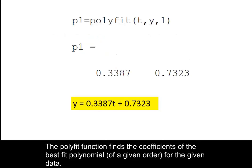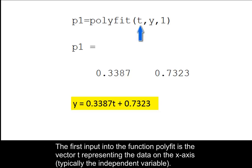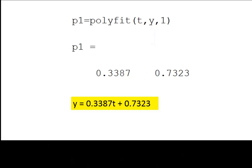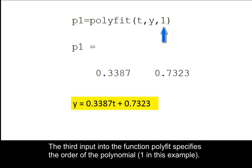The polyfit function finds the coefficients of the best fit polynomial of a given order for the given data. The first input into the function polyfit is the vector t, representing the data on the x-axis. The second input is the vector y, representing the data on the y-axis. The third input specifies the order of the polynomial.